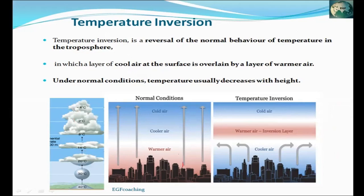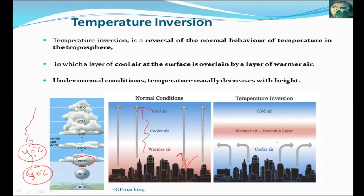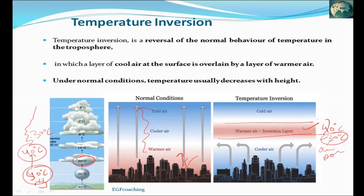Now, consider pollutants emitted from industry at, say, 50 degrees Celsius. Normally, because that air is warmer than the surroundings, it rises. But when an inversion layer exists with temperature of 40 degrees Celsius above, and the industrial emissions are only 30 degrees Celsius, those pollutants cannot rise through the warmer inversion layer. They remain trapped near the surface.